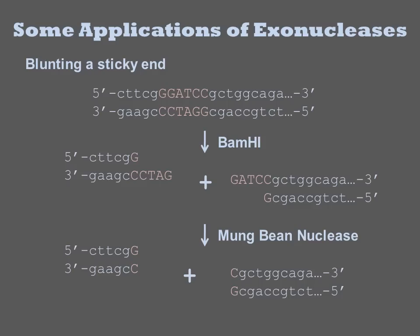Exonucleases have many popular uses including the Gibson method of DNA assembly. Here is a traditional example of using an exonuclease to create a blunt end from a sticky end. First, the DNA is cleaved with BAMH1, which leaves behind 5' four-base-pair extensions. The fragments are then treated with mung bean nuclease that cleaves single-stranded DNAs exclusively. The result is a blunt-ended DNA that can be ligated to other blunt ends such as those generated by ECOR5.